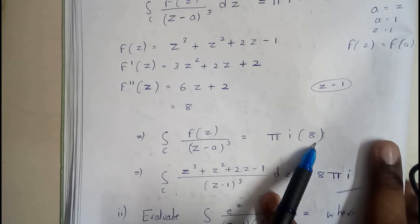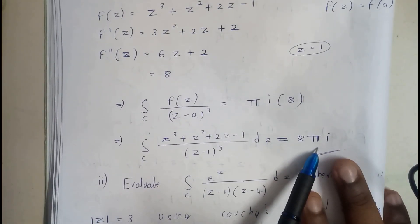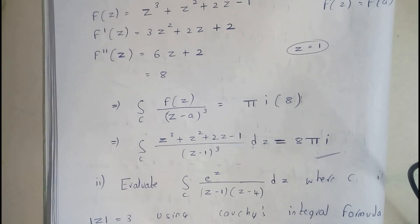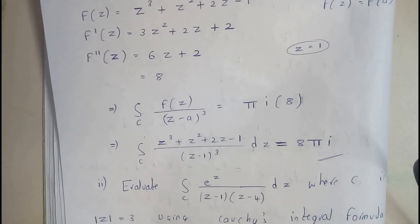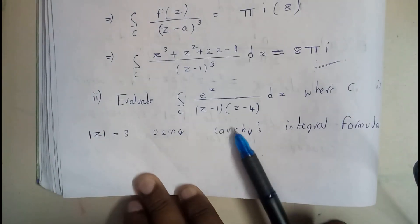is equals to πi × 8. So we got the value is 8πi, so by this the problem is completed. So I hope everyone is clear with this problem. If you are interested you can continue the